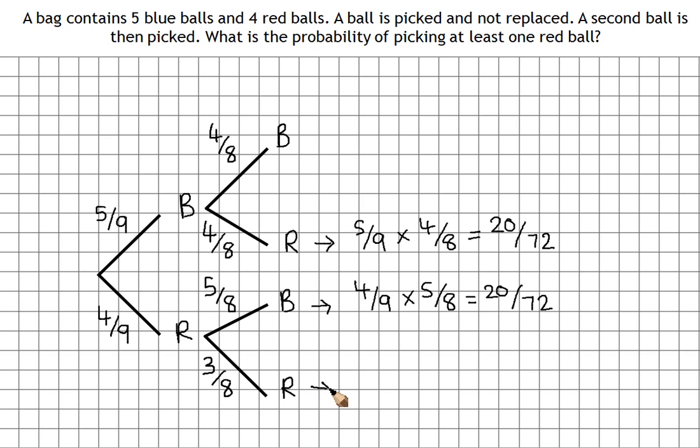And for this branch here, we've got four ninths times three eighths, which is twelve over seventy-two.